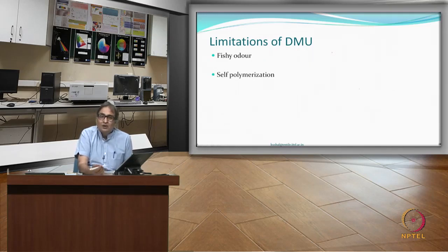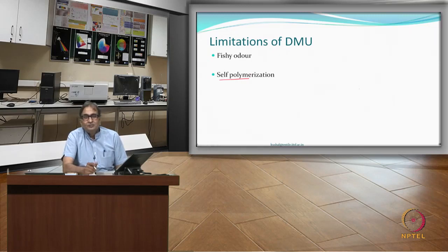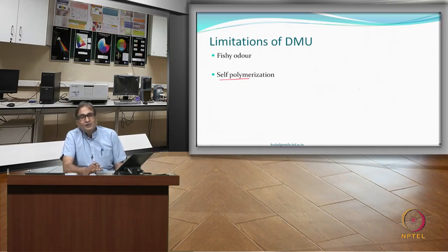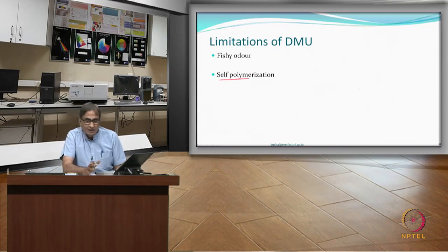Another problem we recalled was that DMU could self-polymerize — it can react with itself to make a longer molecule, generating oligomeric or polymeric material which will either get covalently bonded or form a film on the surfaces of the yarn and fibers. If it becomes like a film, the fabric would become stiff. We just wanted intermolecular crosslinks, not a film-forming substance. So self-polymerization was one of the issues.